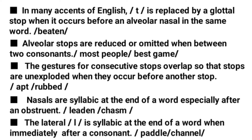In 'apt', we have P and T — these are two plosive consonants. But P doesn't have full explosion because it came before another stop, which is T. T has full explosion. Same is the case with 'rubbed', where B doesn't have full explosion whereas D has full explosion.